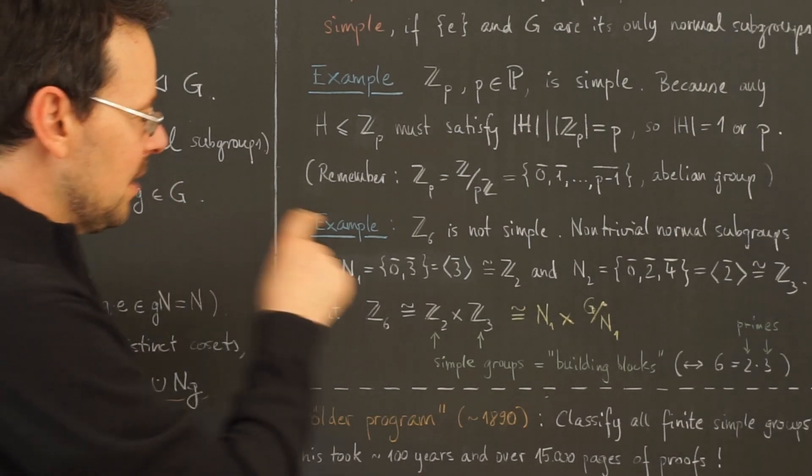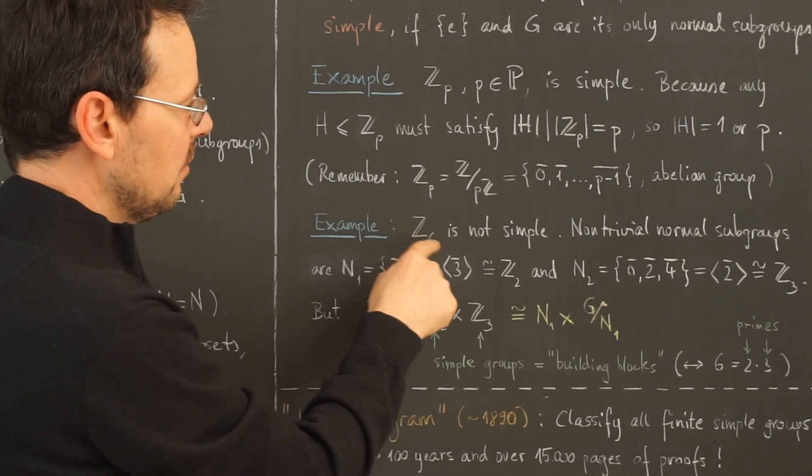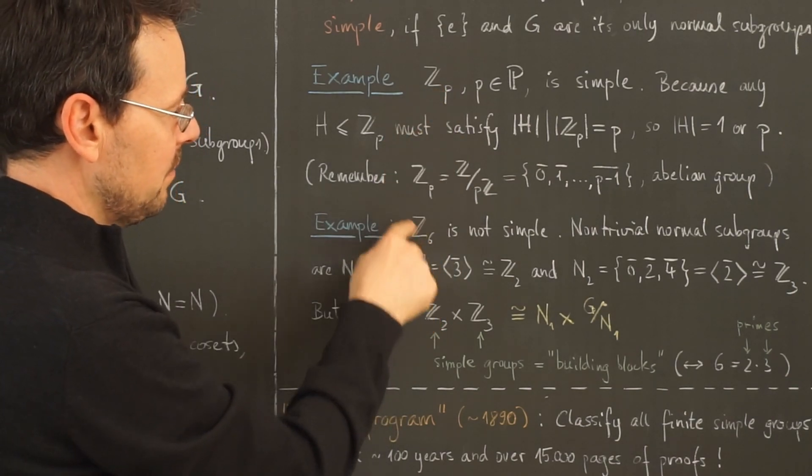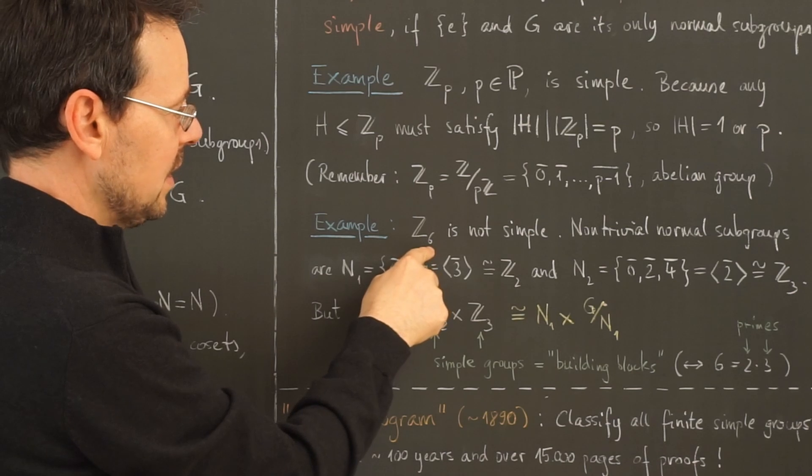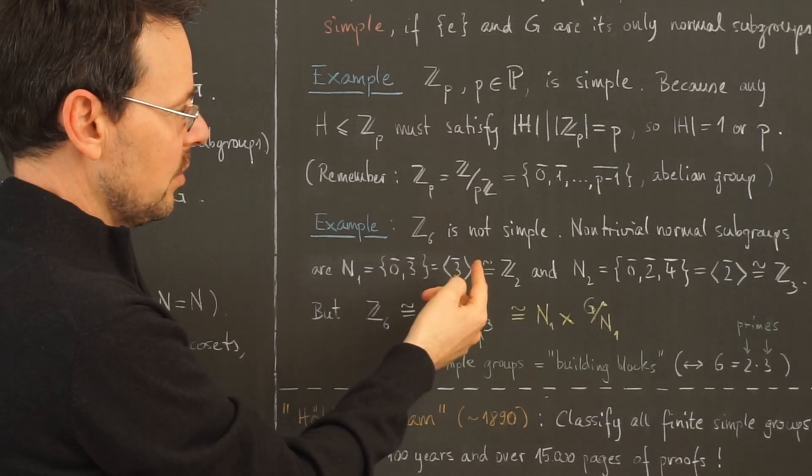In the next example we see that this here fails if this is not prime. For example, if I take Z sub 6, this is not a simple group. Why?